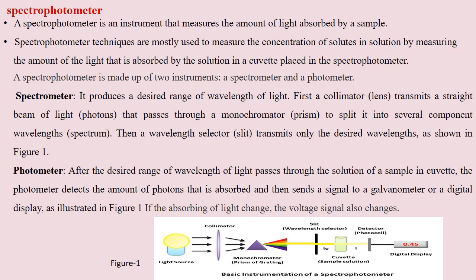The spectrometer part contains some lenses which are known as a collimator, a monochromator which may be either a prism or a grating, and a wavelength selector which is a slit. These three components are involved in the spectrometer part. The remaining part of this instrument is a photometer, which is a device that detects the amount of photons absorbed by the sample, and these signals are converted into electrical signals.